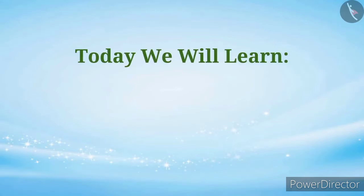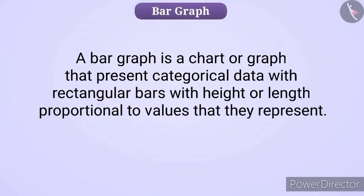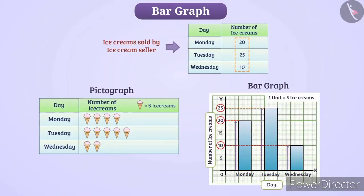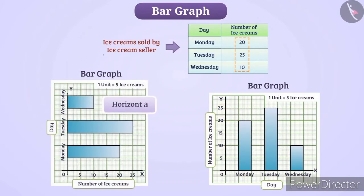Let's now discuss a bar graph. A bar graph is a chart or graph that presents categorical data with rectangular bars, with height or length proportional to the values they represent. The bar graph can be plotted vertically or horizontally.